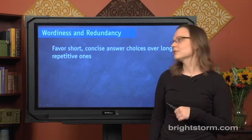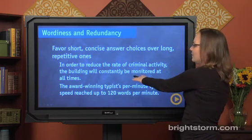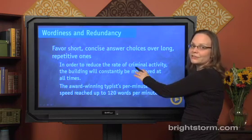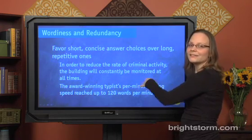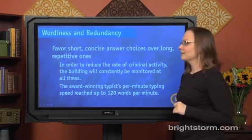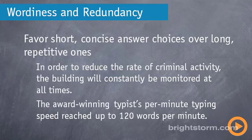Let's look at a couple of examples. If this were on the SAT it wouldn't be a good answer choice — let's look at why and see what a better version would look like. Here's the sentence: "In order to reduce the rate of criminal activity, the building will constantly be monitored at all times."